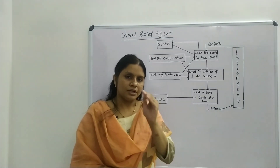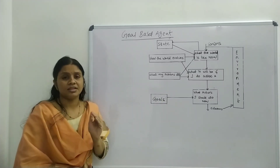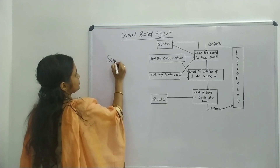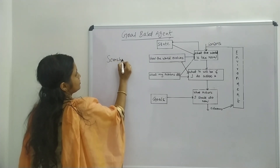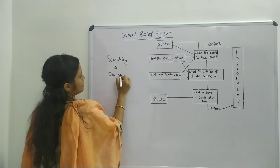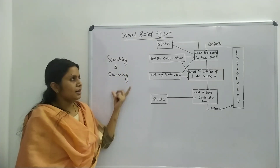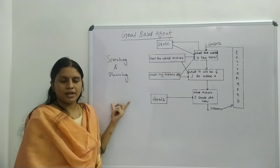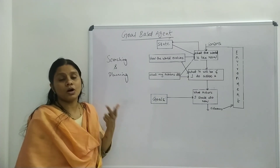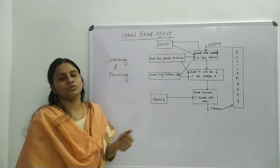So in a goal based agent, both searching and planning is needed. They are the main fields in AI devoted for finding the possible set of actions in order to achieve the goal.